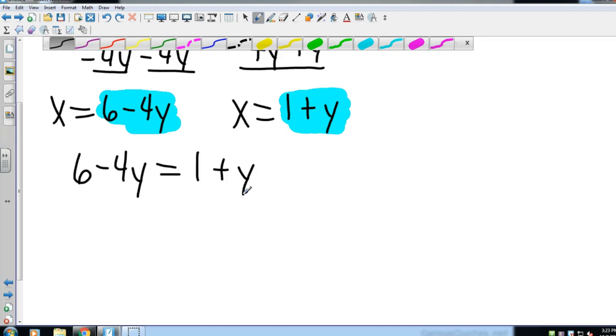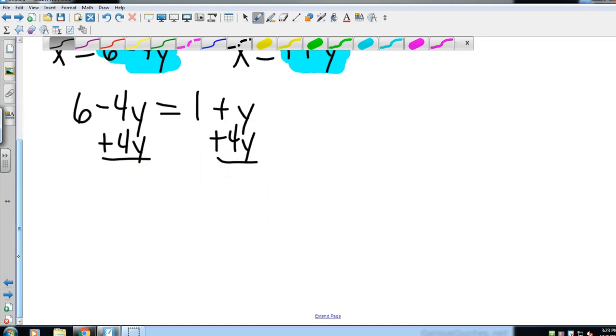And now I'm just going to solve for y. So lots of different things we could do here. Let's go ahead and take smallest to biggest, so I'm going to take this negative 4y to the other side by adding it. That gives me 6 equals 1 plus, and we have y plus 4y. Remember, put a 1 there if you want to, so 1y plus 4y gives me 5y.